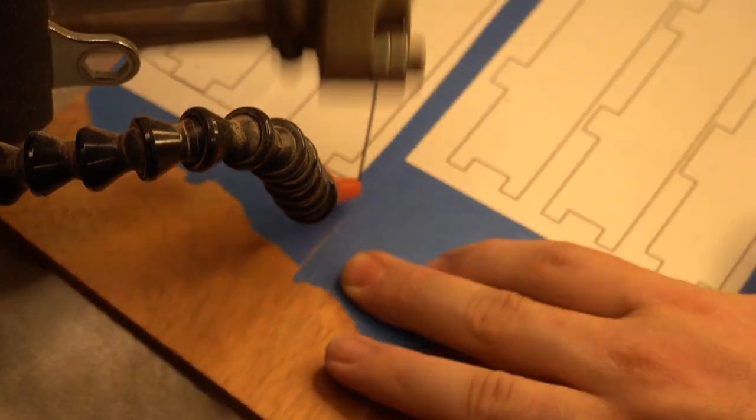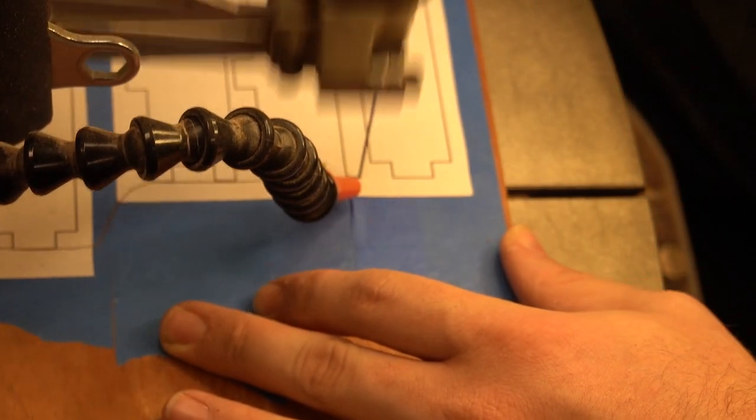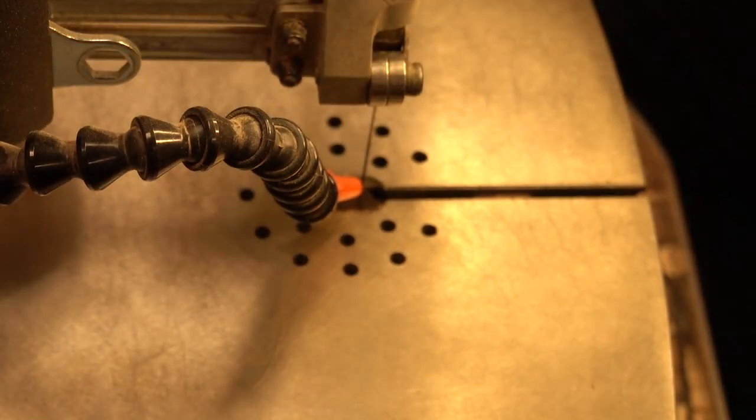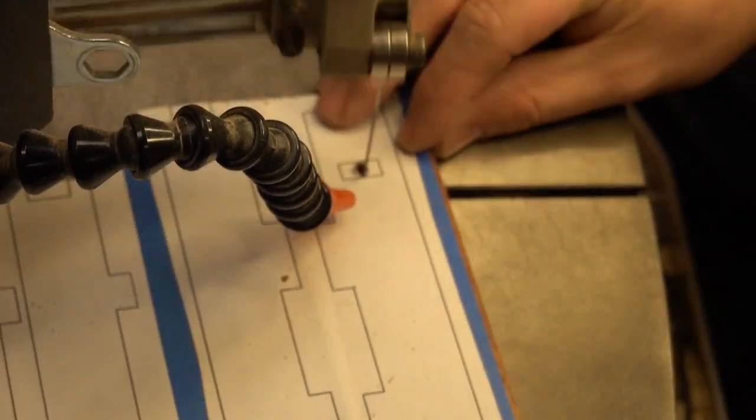Something that you'll see me do from time to time, like you see me doing here for this pattern, is I will put all the pieces on a larger board, and then break it up into smaller chunks so it's easier to manipulate, and that's what I'm doing here.